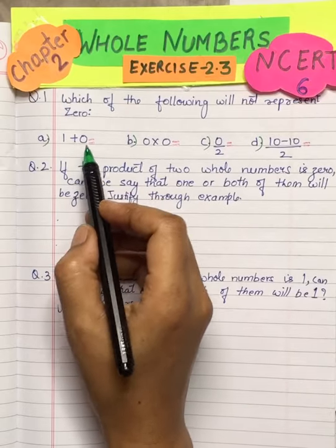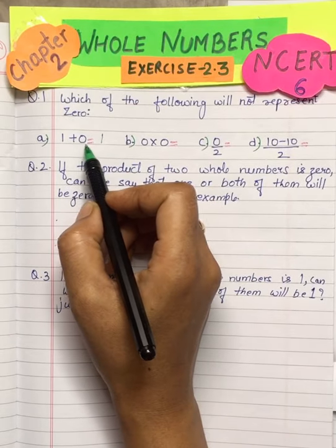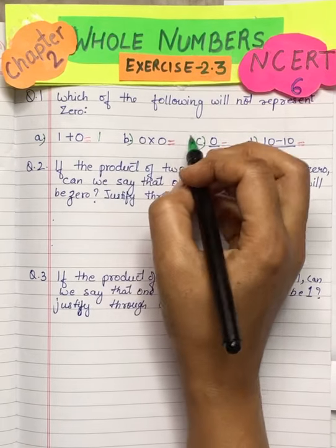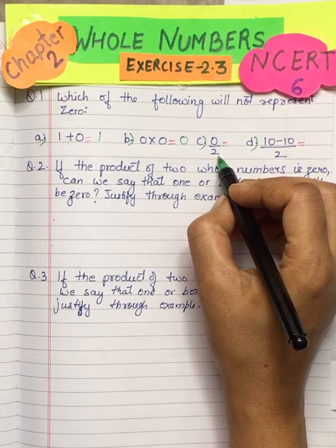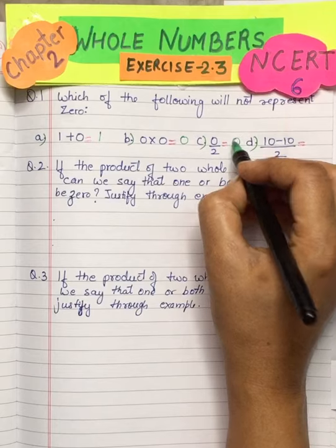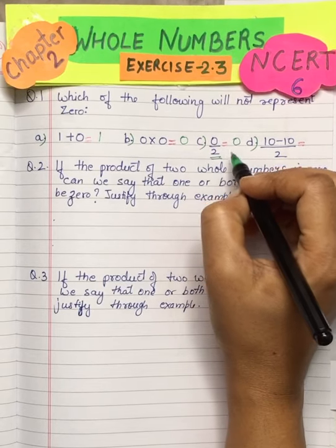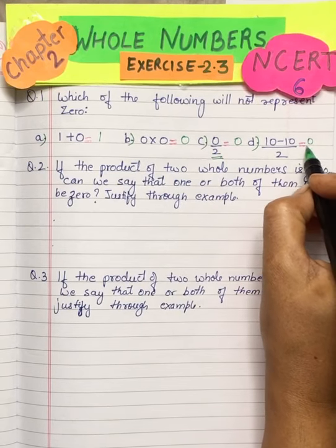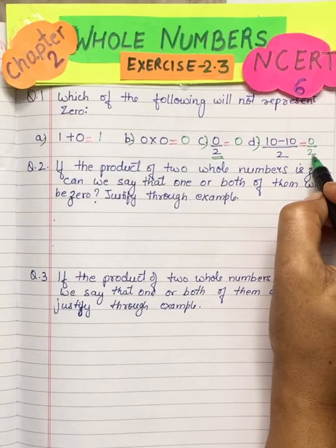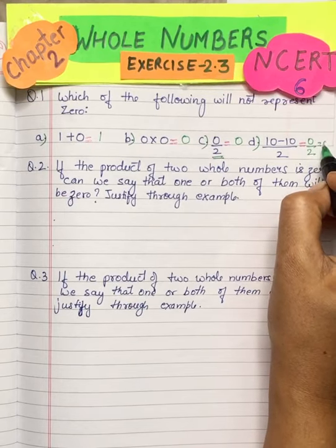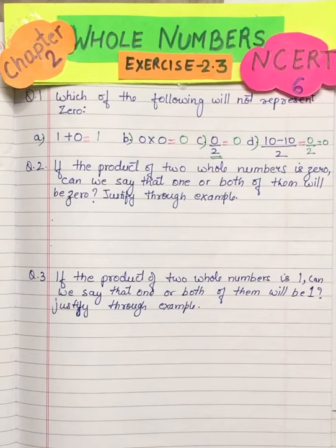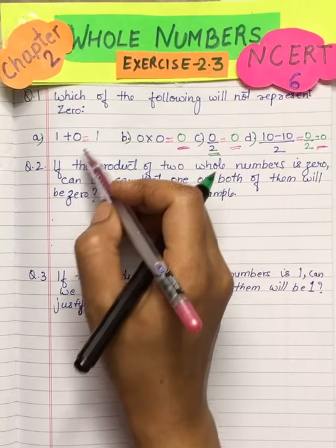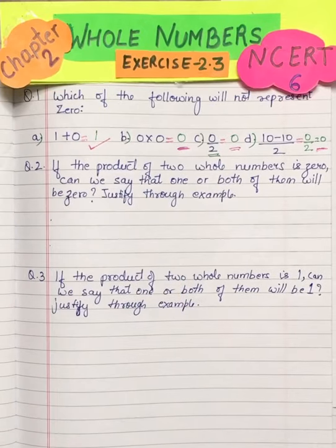Now 1 plus 0 is 1. 0 into 0, we know it's 0. Now 0 divided by any number, it is always 0. Now this one, we need to solve: 10 minus 10 is 0, 0 upon 2. Again we get 0 being divided by a number, so this too is 0. So which one's answer is not 0? The first one's answer will be this one.